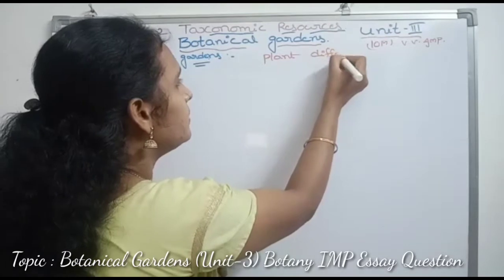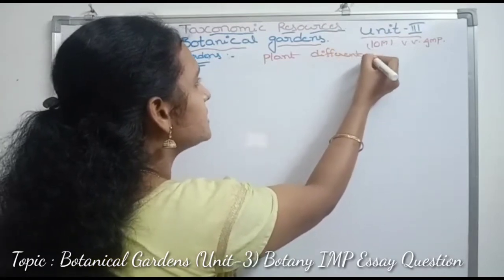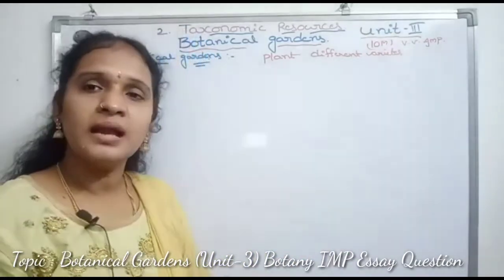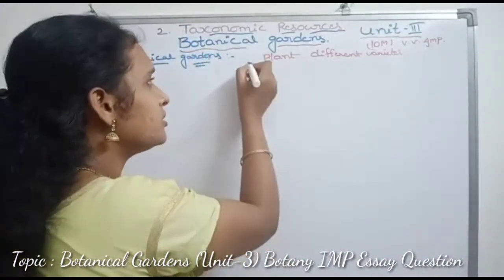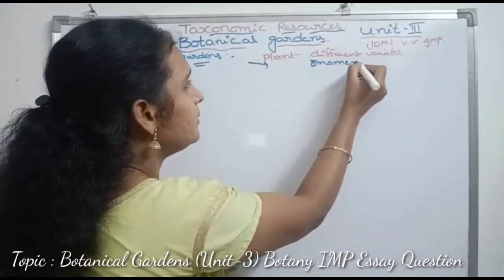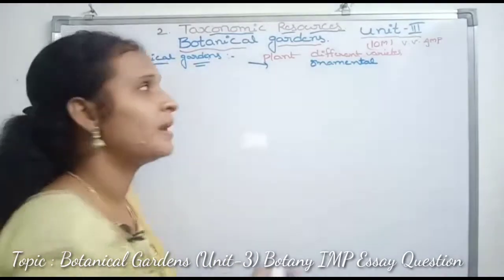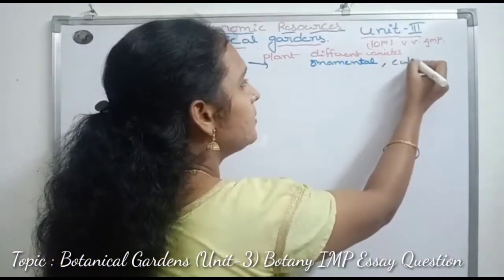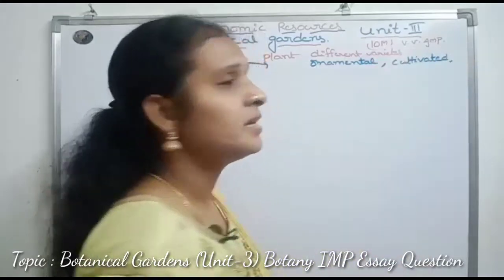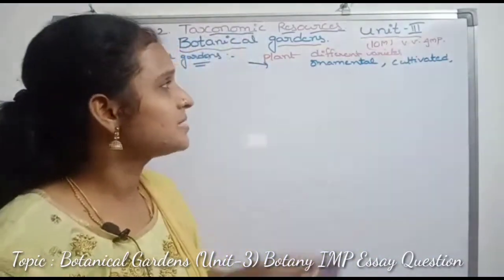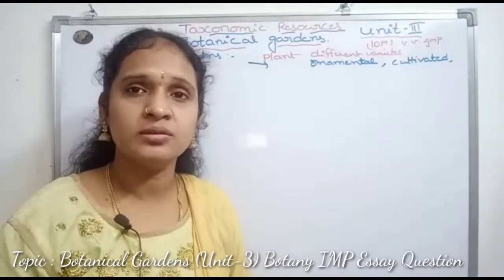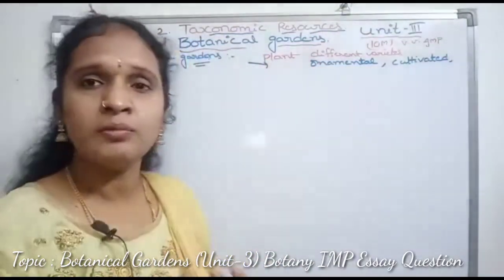In Botanical Garden, there are different types of plant varieties. They include ornamental or cultivated ones. Ornamental means ornamental plants. Cultivated means crop plants, or flowering plants. So what is the main role of Botanical Garden?